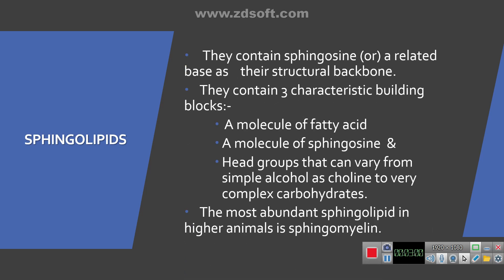The other major component used for the preparation of liposomes is sphingolipids. They contain three characteristic building blocks: one molecule of fatty acid, one molecule of sphingosine, and the third part is head groups that can range from simple alcohols such as choline to very complex carbohydrates. The most abundant sphingolipid in higher animals is sphingomyelin, and that is mainly used in the production of liposomes.